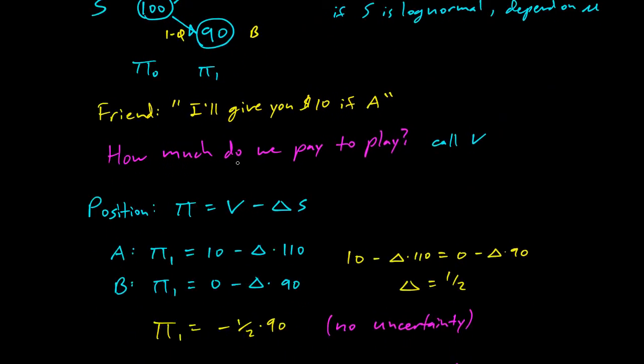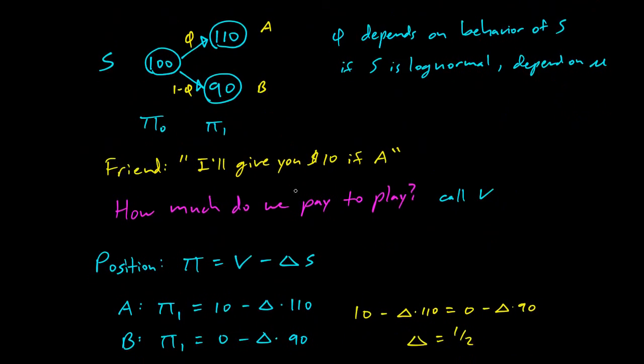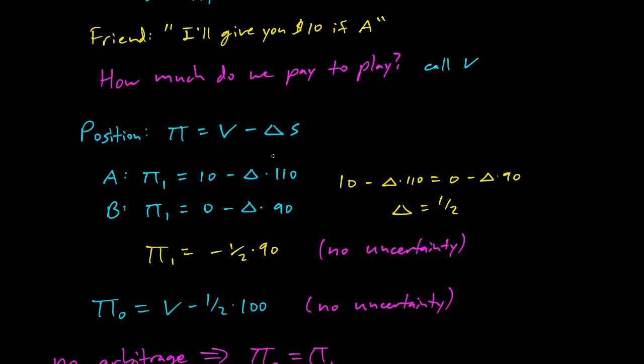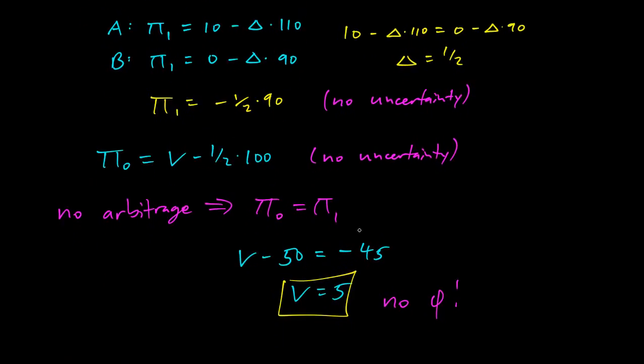And the reason is the no arbitrage principle. So because we can hedge the position of this game, so because we can make the outcome totally certain, the no arbitrage principle springs into action and forces a certain price on the option or the value of the game.